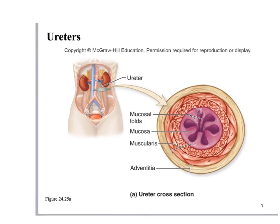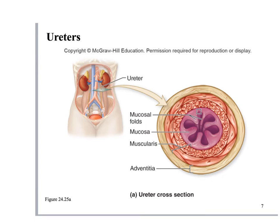Once urine is produced, it is transported from the kidney to the bladder through the ureters. These are muscular tubes that contract through peristalsis to milk urine from the renal pelvis into the bladder. There are some mucosal folds and a muscularis layer. There are three layers of tunics in the ureter: mucosa, muscle, and then the serosa/adventitia on the outside. The kidney is retroperitoneal and much of the ureter is also retroperitoneal; it then crosses over the peritoneum into the bladder.